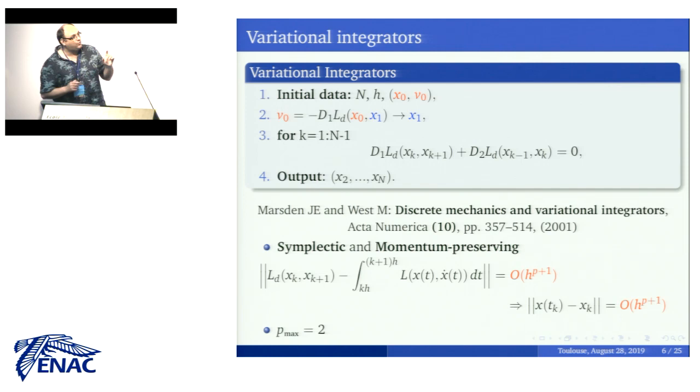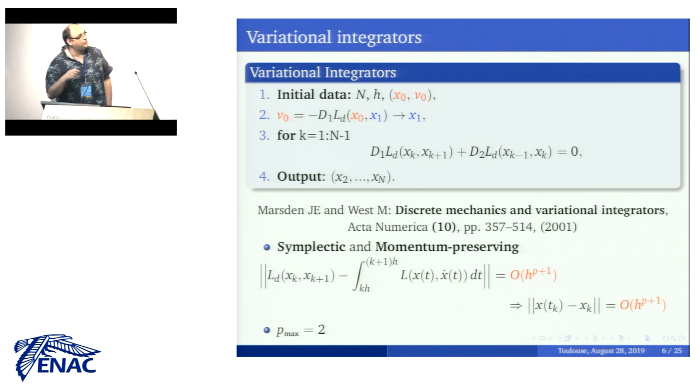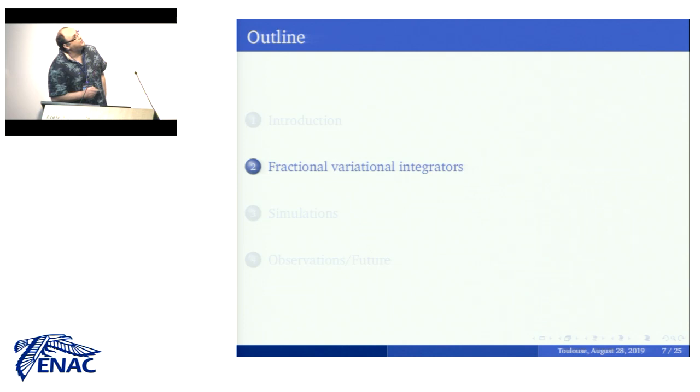What do I mean by low order as put in the title? When we are considering only xk and xk+1 to have our approximation of the action, the maximum order of accuracy that we get is two. To raise that up, we would need to use inner nodes, but I am going to stick to xk and xk+1. Therefore, the maximum order we would get is two when we use the trapezoidal or midpoint rule.